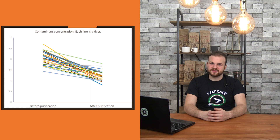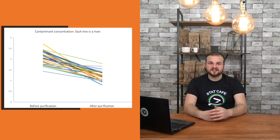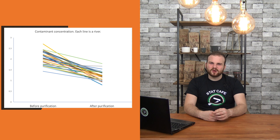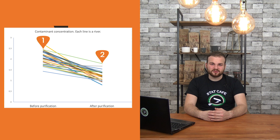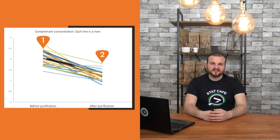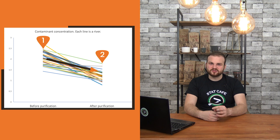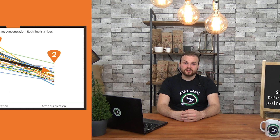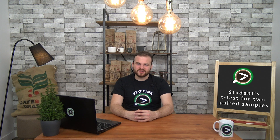According to a line chart representation of the data, this seems to be the case. This chart highlights the idea of dependency — each line represents one river, and each downstream measurement is linked to a corresponding upstream measurement within the same river. You are interested in the global tendency of contaminant concentration between the two positions. You will use a Student's t-test for two paired samples to compare the two means. The result may provide statistical support for the global decrease observed on the line chart.